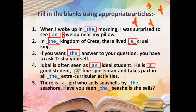He is a good student, a fine sportsman, and takes part in all the extracurricular activities. Now you might ask: 'activities' also starts with 'e,' so why did we put 'the'? Because 'a' and 'an' mean 'one,' and 'activities' is plural. You cannot put 'one' before a plural noun. So whenever a plural noun is given, always use 'the.' All the earlier examples — envelope, kingdom, cruel king, answer, ideal student, good student, fine sportsman — were all singular.